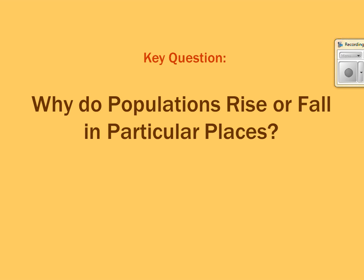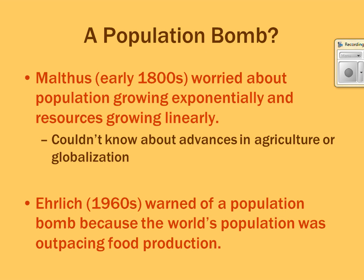So why do populations rise or fall in particular places? Thomas Malthus is a major philosopher and geographer connected with population. He lived during the early 1800s before major advances in globalization and agriculture. He feared that since population growth expands exponentially but resources only grow linearly, we would eventually run out of food. He didn't foresee the Green Revolution or global trade networks, so it hasn't been as bad as he predicted.